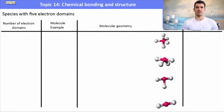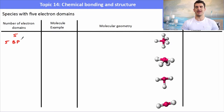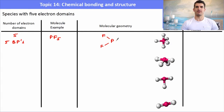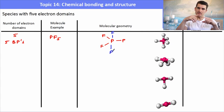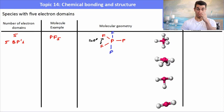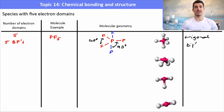Now let's look at things with 5 electron domains. If we've got 5 bonding pairs of electrons — 5 bonds surrounding the central atom — an example would be PF5, phosphorus pentafluoride. We have phosphorus in the middle, three fluorines in a triangular arrangement all on the same plane, and then one fluorine coming out of the plane and one below. Inside the plane the angles are 120 degrees, and between the planes we have 90 degree angles. The name of this shape is trigonal bipyramidal.